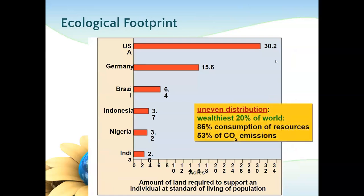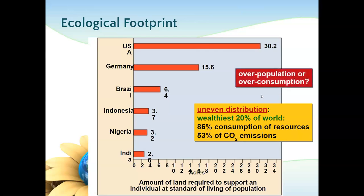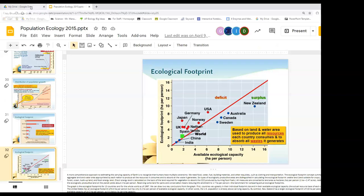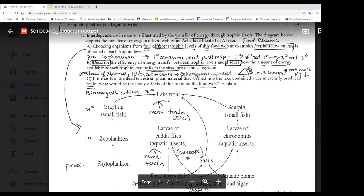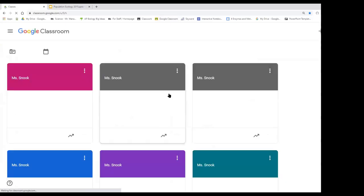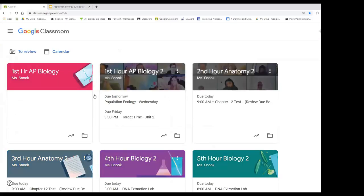We won't get into the ecological footprint in detail, but it's interesting that more densely populated areas down here are using much less of the resources, while up here we have a lower population but are using the majority of the resources and producing the majority of carbon dioxide emissions. We have a very high ecological footprint today. That was a lot of content — I wanted to make sure to hit all those points we hadn't covered in our fun exploration of the skin. Thank you.